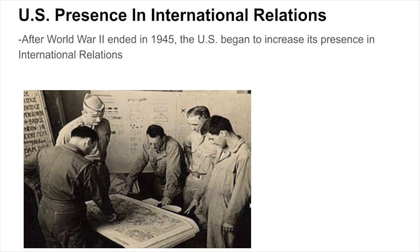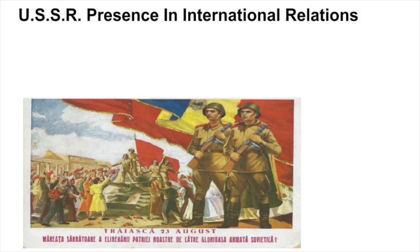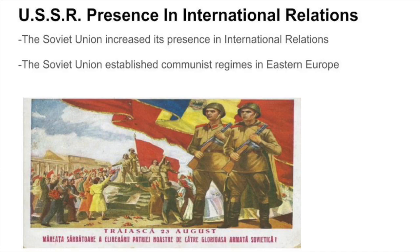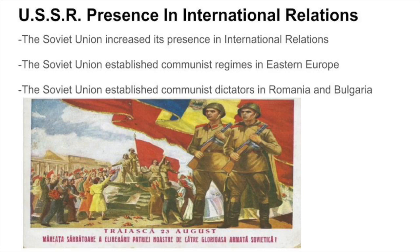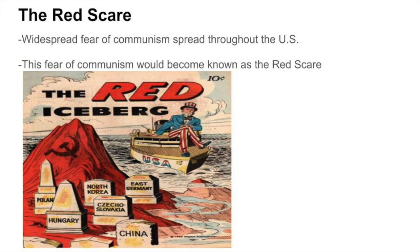After World War II ended in 1945, the U.S. began to increase its presence in international relations. This increased presence was enacted through the creation of the Central Intelligence Agency, also known as the CIA. After World War II, the Soviet Union also increased its own presence in international relations, establishing communist regimes in Eastern Europe and installing communist dictatorships in Romania and Bulgaria. These actions led to widespread fear of communism across the U.S.